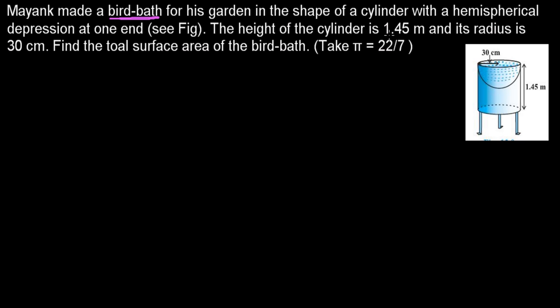The height of the cylinder is 1.45 meter - this is the height. And its radius is 30 centimeter - same radius the cylinder also has. So find the total surface area of the bird bath, take π as 22 by 7.